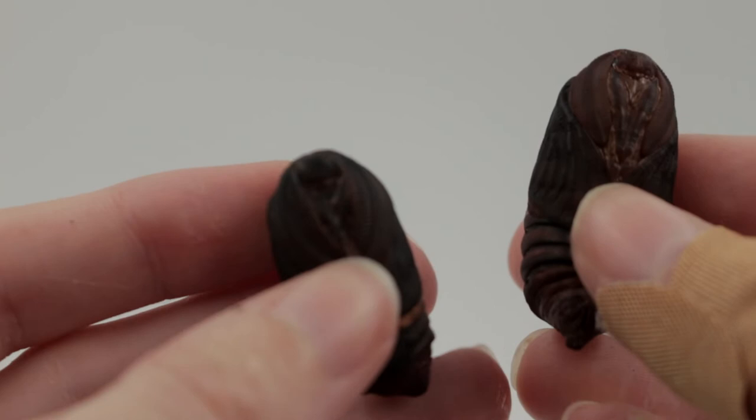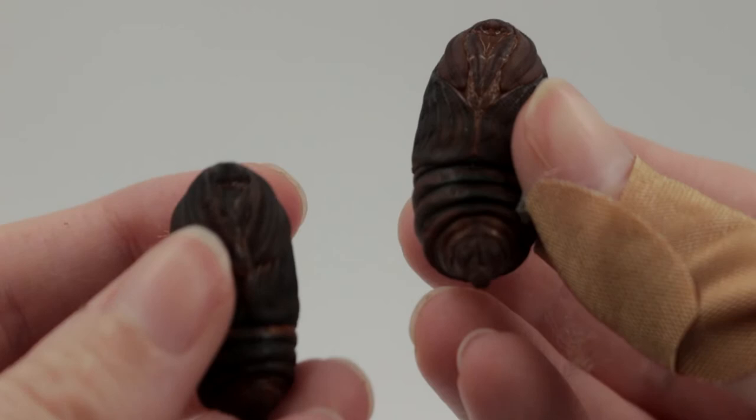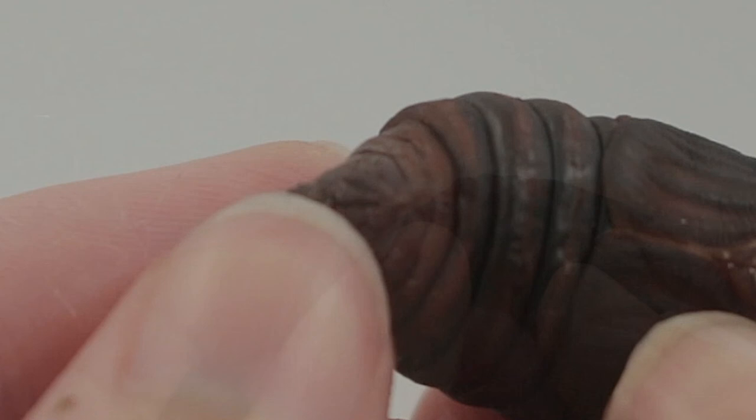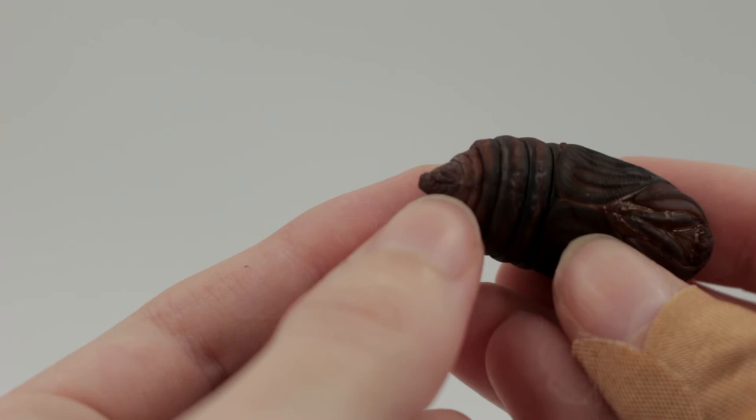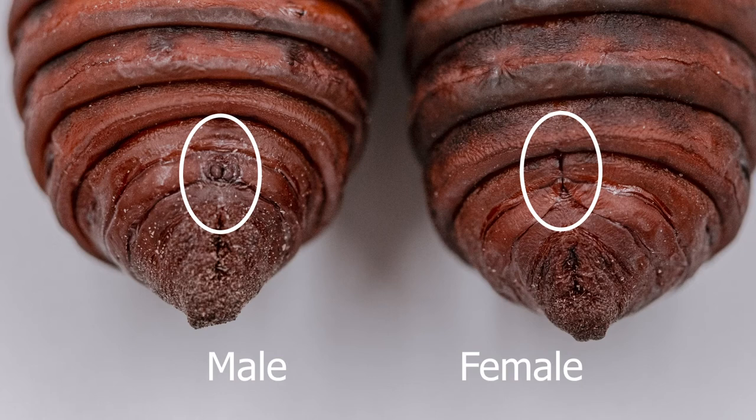And then when looking at the abdomen, which again might be a little bit trickier on some of these livelier ones, the female has basically a line that goes across multiple segments on the end. And you can see that line right there. That's going to end up becoming her ovipositor, the part of the moth that lays the eggs.